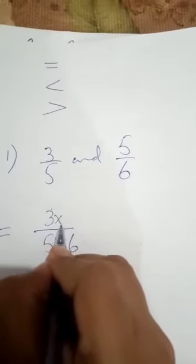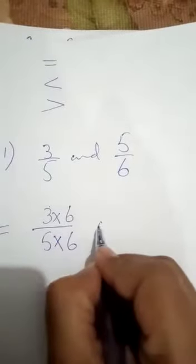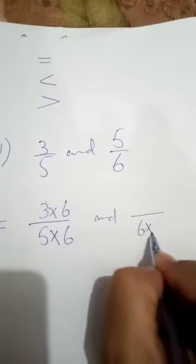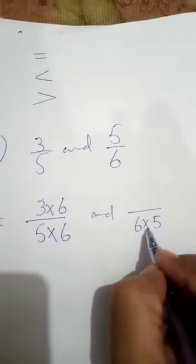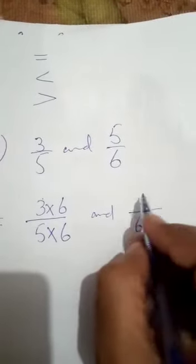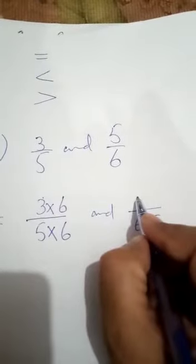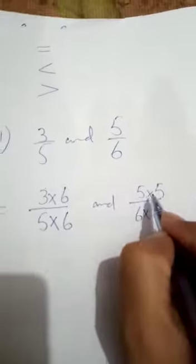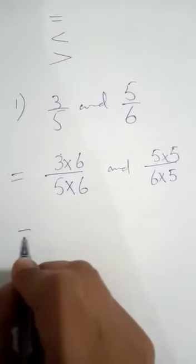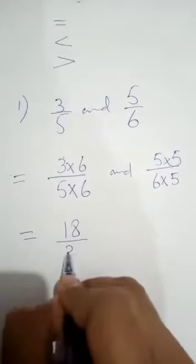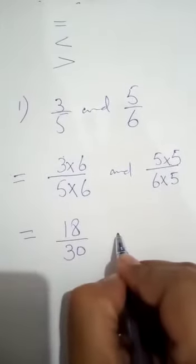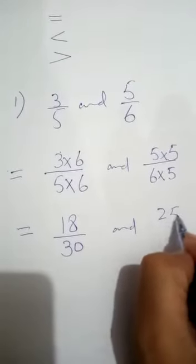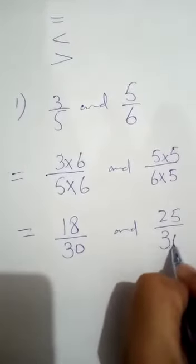Now we multiply: for 3/5, we multiply both numerator and denominator by 6, because 5 × 6 = 30. So 3 × 6 = 18, giving us 18/30. For 5/6, we multiply both numerator and denominator by 5, because 6 × 5 = 30. So 5 × 5 = 25, giving us 25/30.